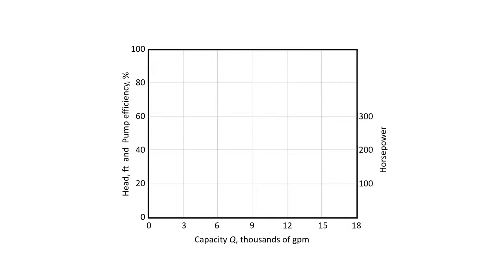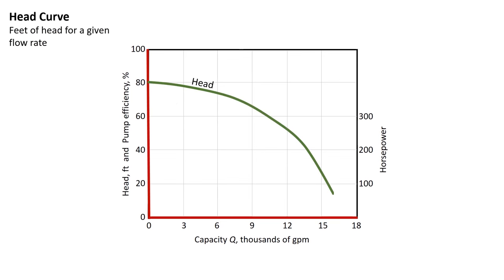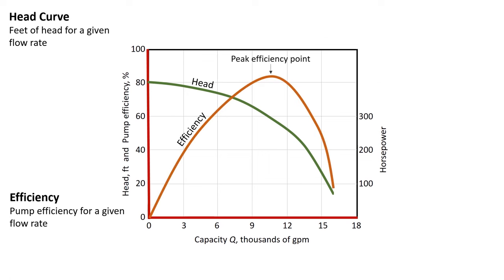Here we have a pump characteristic curve showing head in feet and pump efficiency versus the capacity in thousands of gallons per minute. Looking at the pump curve for a particular impeller, the head curve shows feet of head for a given flow rate. We also need to put the efficiency curve for that impeller, so efficiency is the pump efficiency for a given flow rate. This shows you the efficiency of the pump versus head for a given flow rate, and you can see that we have the peak efficiency point right at the top of the efficiency curve.